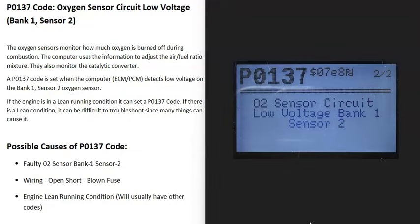Today I'm talking about a P0137 code, what it is and how you go about fixing it. A P0137 code is an oxygen sensor circuit low voltage bank one sensor two.